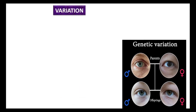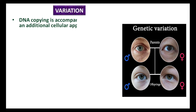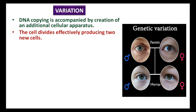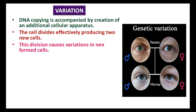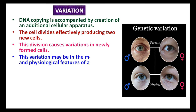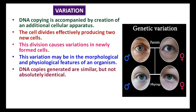Now we will see what variation is. DNA copying is accompanied by the creation of an additional cellular apparatus. The cell then divides, effectively producing two new cells. This division causes variations in newly formed cells, which may be in the morphological and physiological features of an organism. DNA copies generated are similar but not absolutely identical.